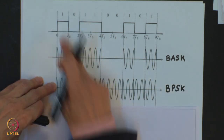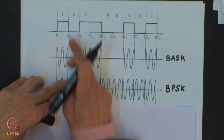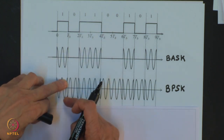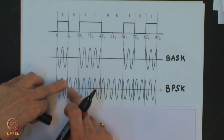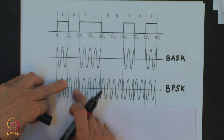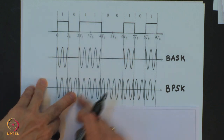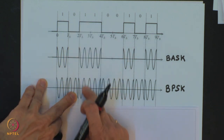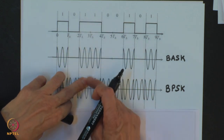For 1 we have the cosine waveform; for 0 the phase changes. It suddenly changes and then again you have 1, then again it changes the phase and continues. This is how you generate the BPSK signal.